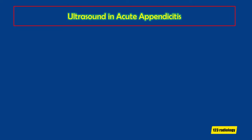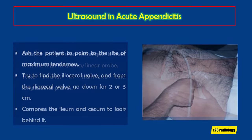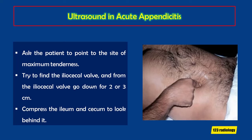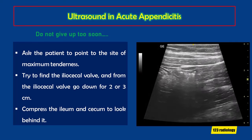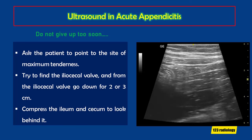Ultrasound is the first imaging study of choice in acute appendicitis. Graded compression technique is used with the high-frequency linear probe, taking images in transverse and longitudinal planes, scanning from the iliac crest to the bladder. First ask the patient where the site of maximum tenderness is and have them point with one finger, because self-localization helps find the appendix easily. Search where the pain is indicated and also search systematically. Try to find the ileocecal valve, then go down 2 to 3 cm — that is usually the location of the appendix.